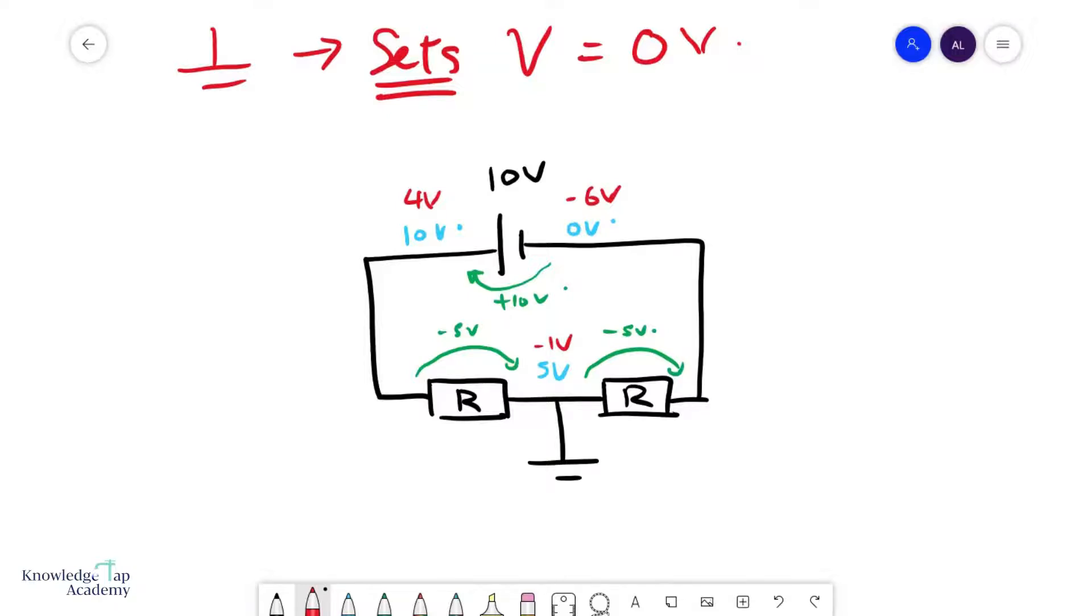And the question now is, which of these are correct, the blue set or the red set? Well, the answer is no one knows. That's the thing: without earth, I can choose any potential I want and it will be okay. The only thing that has to be correct, of course, are the potential differences.